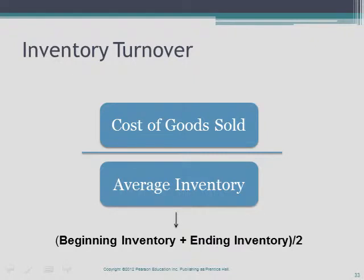Ideally a business could operate with zero inventory, but most retailers must keep some goods on hand. Inventory turnover — the ratio of cost of goods sold to average inventory — indicates how rapidly inventory is sold and shows how many times the company turned over its average level of inventory during the year. Inventory turnover varies from industry to industry, which points to the importance of comparing these ratios to comparable firms in similar industries to understand whether a ratio is favorable or unfavorable.